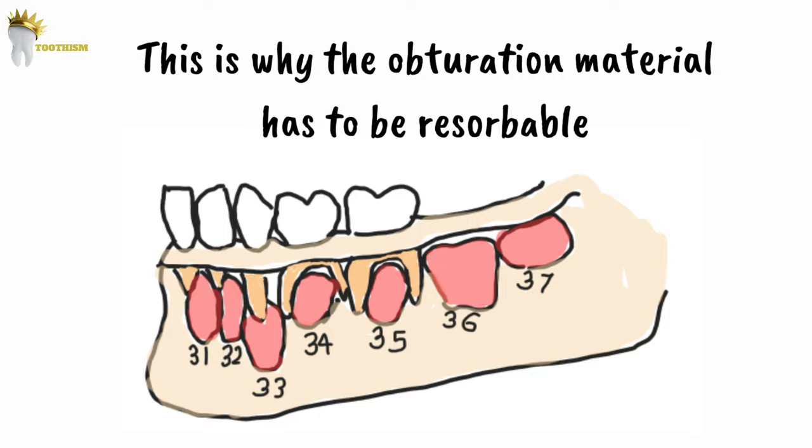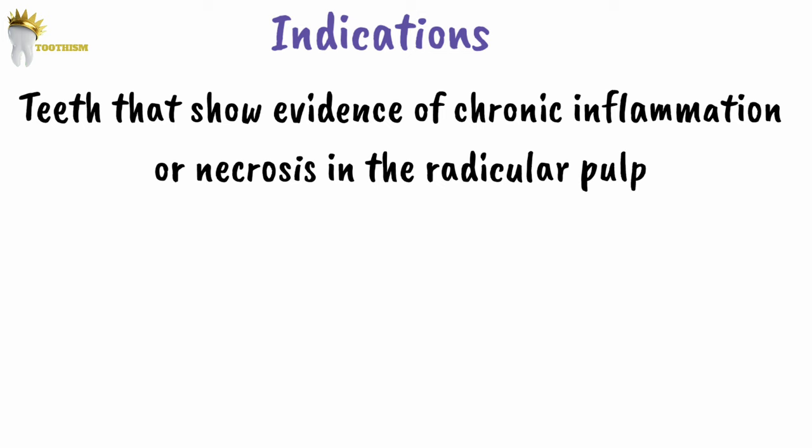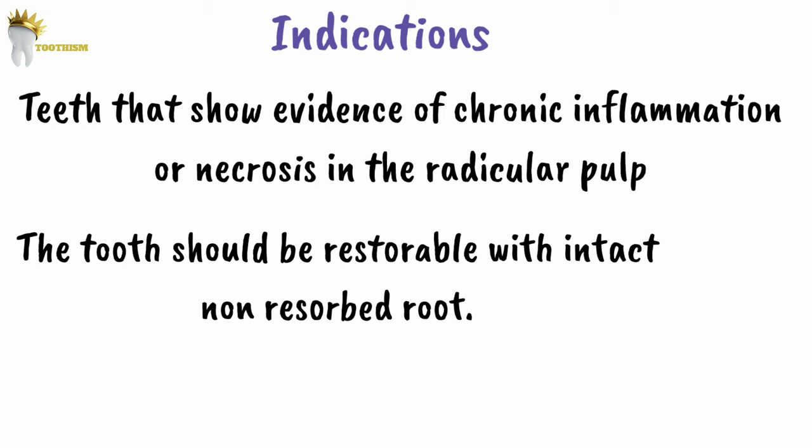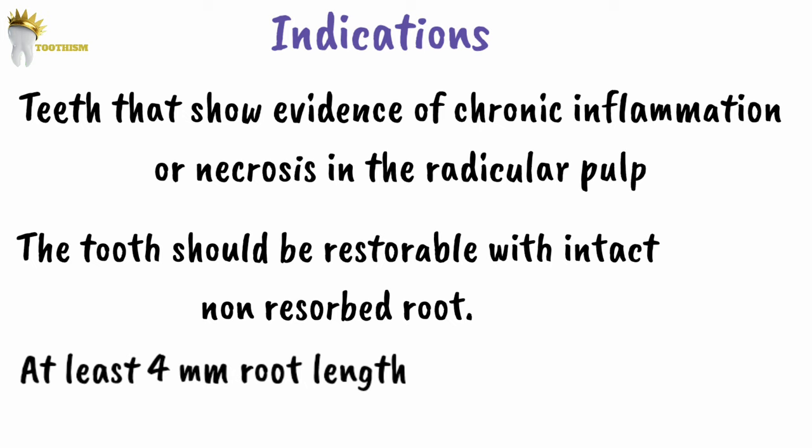First we will understand when pulpectomy is indicated. The procedure is indicated in teeth that show evidence of chronic inflammation or necrosis in the radicular pulp. The tooth should be restorable, and the pre-operative radiograph should confirm an intact, non-resorbed root. Root length is the most reliable criterion of root integrity, and at least 4 mm of root length is necessary for the primary tooth to be treatable.